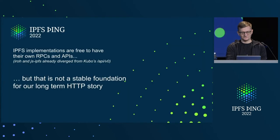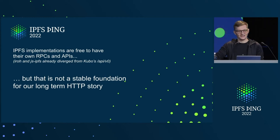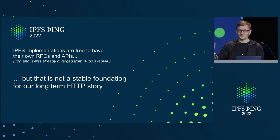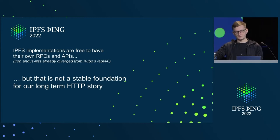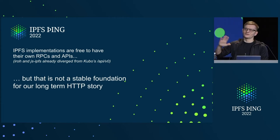One lesson learned is that IPFS implementations should be free to have their own RPCs, and we already see that. JSIPFS already went their own direction with a subset of RPCs — initially it just copied what Kubo did. IRO, the IPFS implementation in Rust, uses gRPCs — they already went their own way. The point is those RPCs are fine if you want to interact with or orchestrate a specific implementation of IPFS, but it's not the stable foundation to create a long-term HTTP story for IPFS.